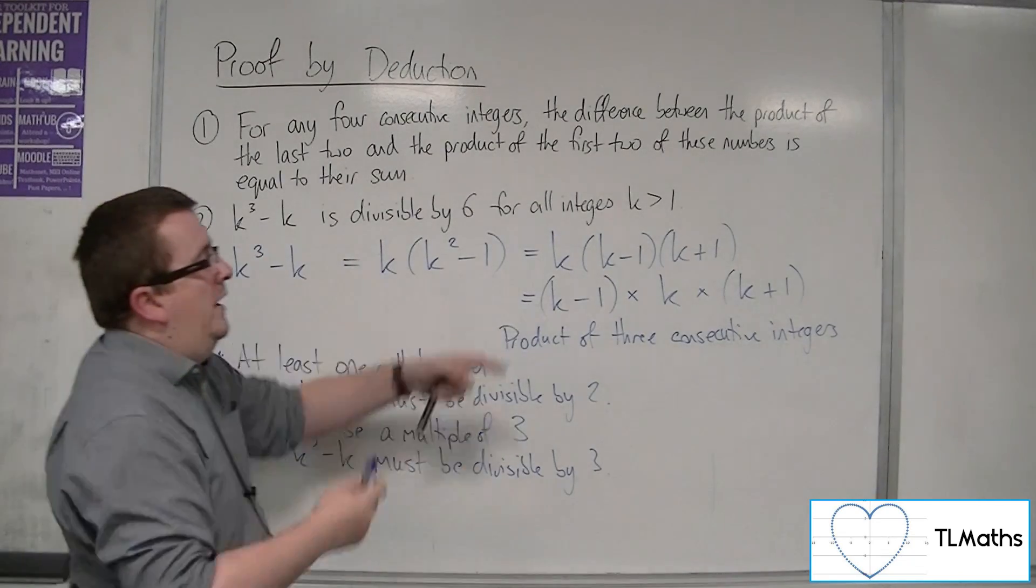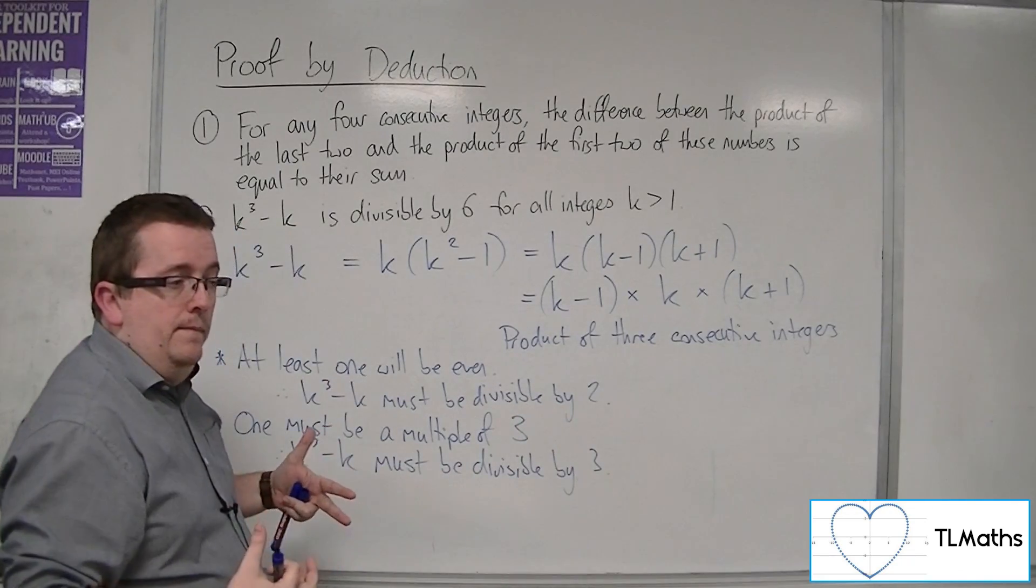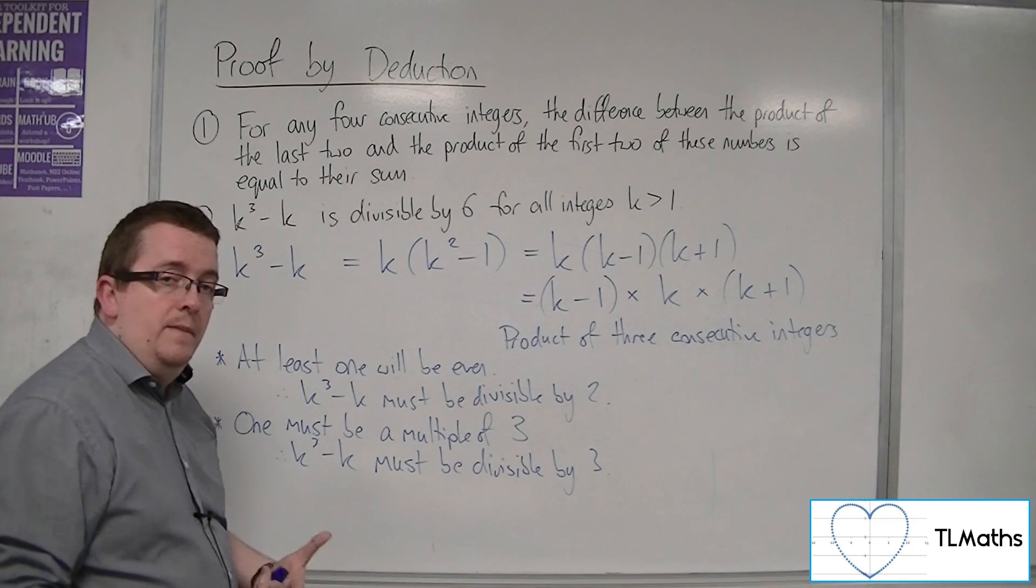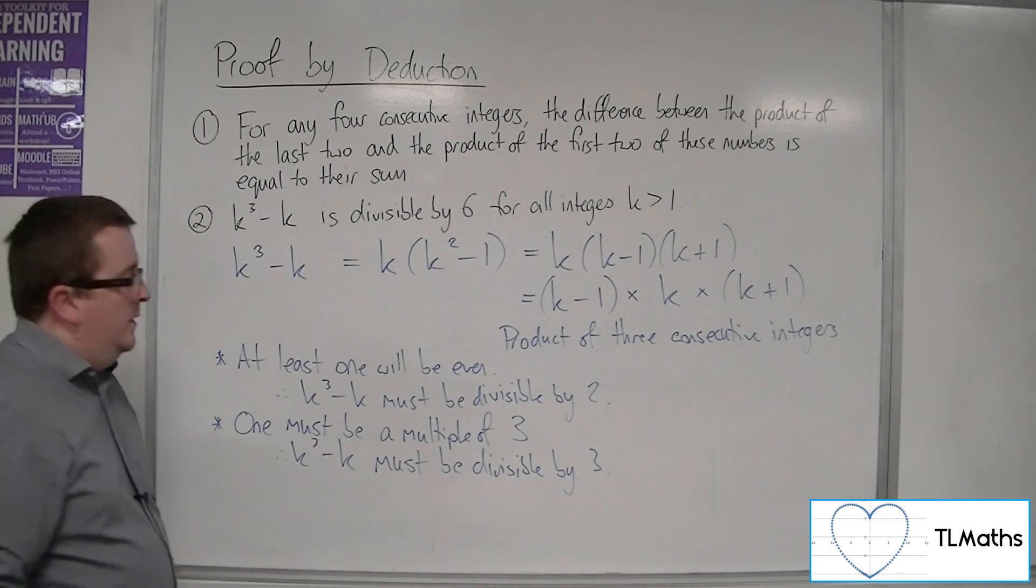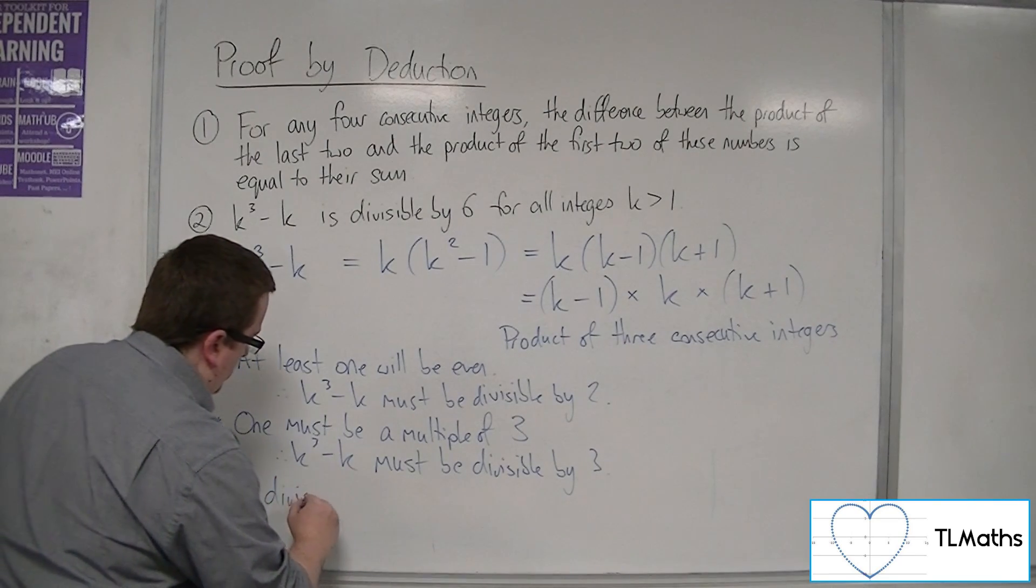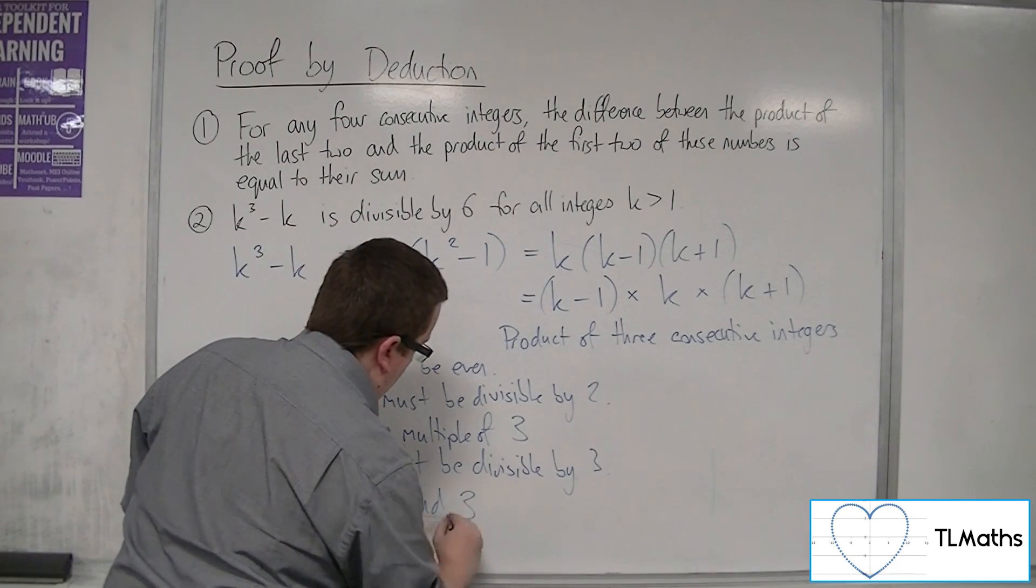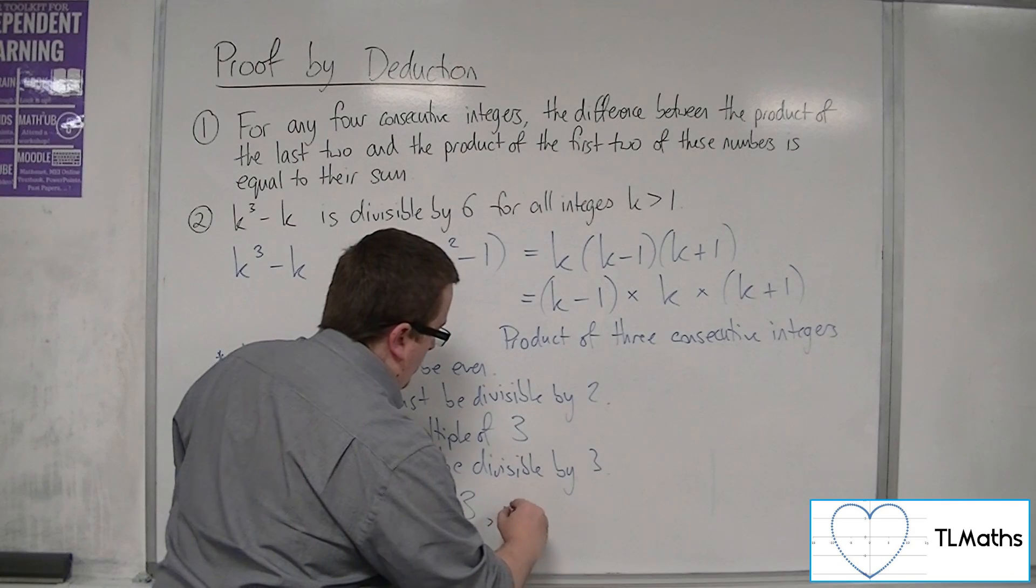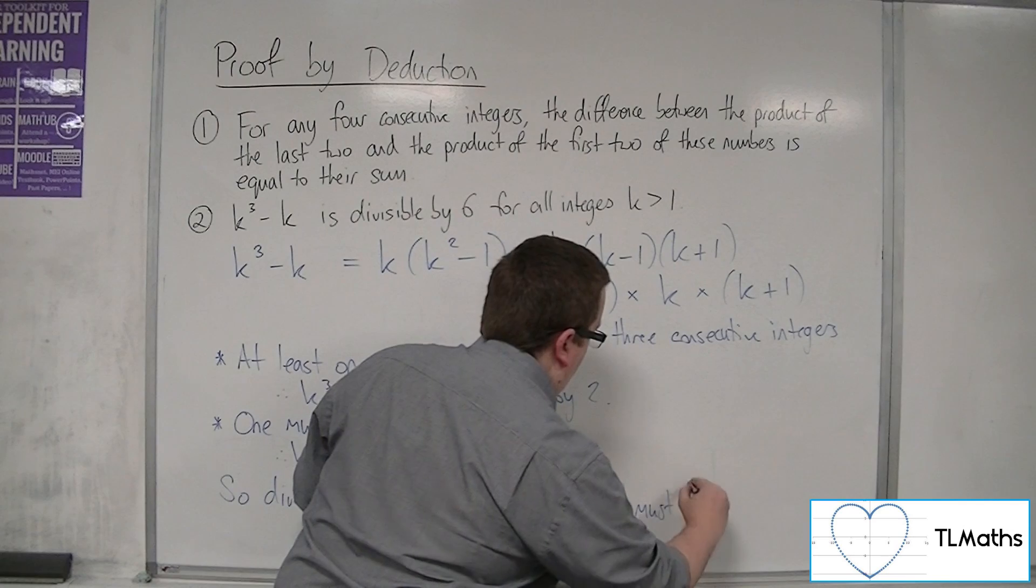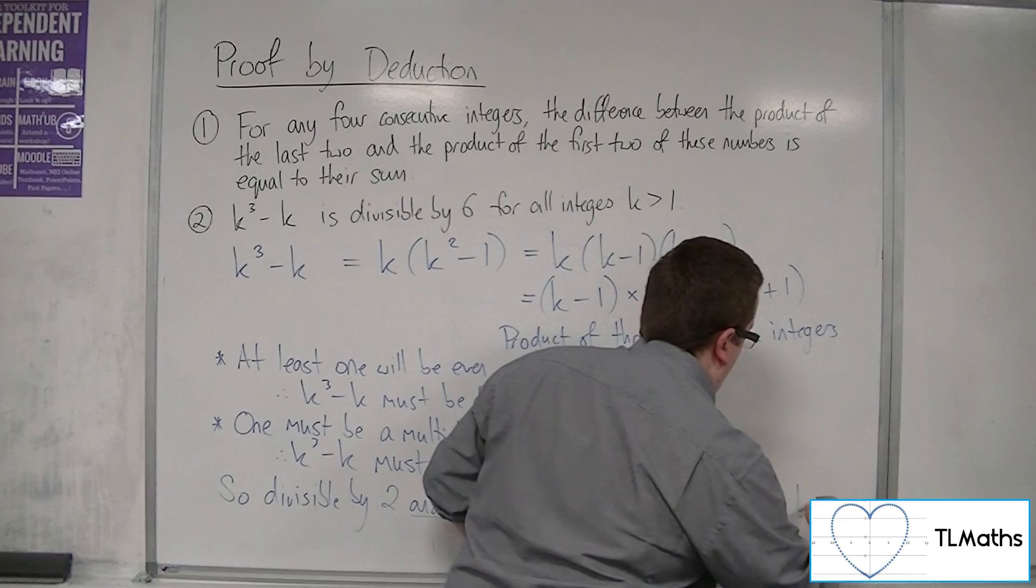Which means, if I had this, I would be able to pull out the 2, factor out the 2, factor out the 3. And so, because it's divisible by both 2 and 3, it must be divisible by 6. So, divisible by 2 and 3 means k cubed minus k must be divisible by 6.